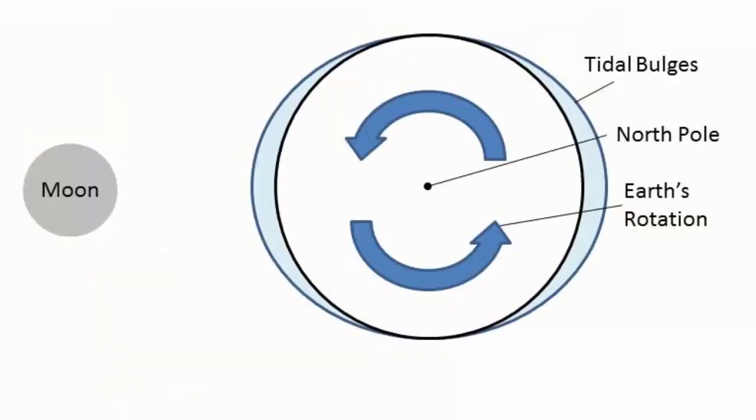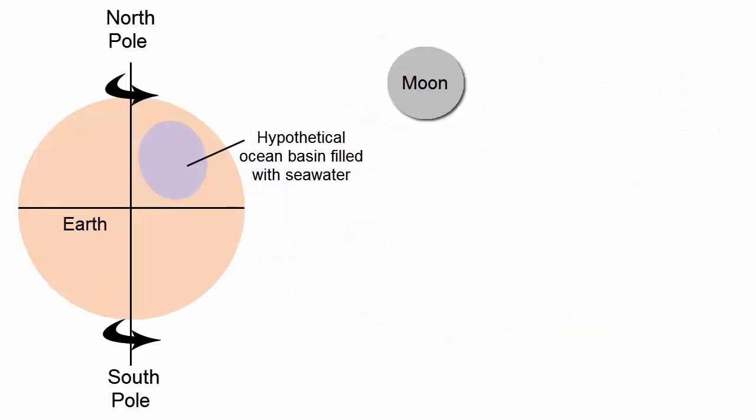Now, it's all very well to say that the bulges stay in place and the Earth rotates under them, but we know that the oceans are confined to basins and water doesn't hop over the continents as the planet rotates. How do ocean basins impact tidal behavior?